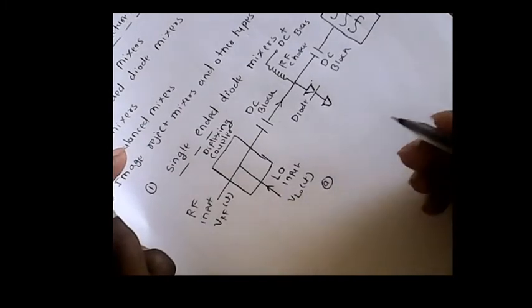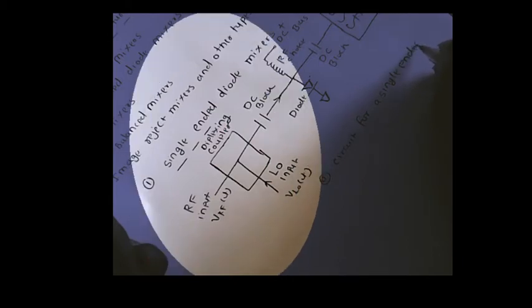There is a low pass filter at the output, and the output is in terms of current — the intermediate frequency (IF) output current, which is sinusoidal. This is Figure A, which shows the complete circuit for a single ended mixer.